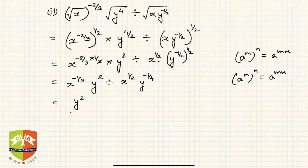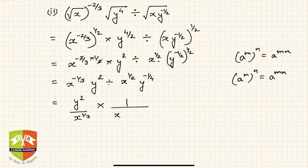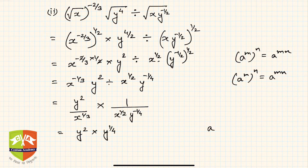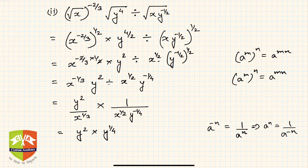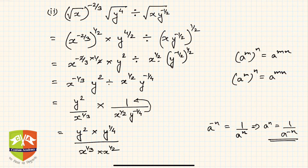Simplifying further: y squared divided by x to the power 1 by 3. Since it's a division, x to the power 1 by 2 and y to the power minus 1 by 4 go into the denominator. Using the rule a to the power minus n equals 1 upon a to the power n — or equivalently, a to the power n equals 1 upon a to the power minus n — y to the power minus 1 by 4 in the denominator becomes y to the power 1 by 4 in the numerator. So we now have y squared times y to the power 1 by 4, divided by x to the power 1 by 3 times x to the power 1 by 2.